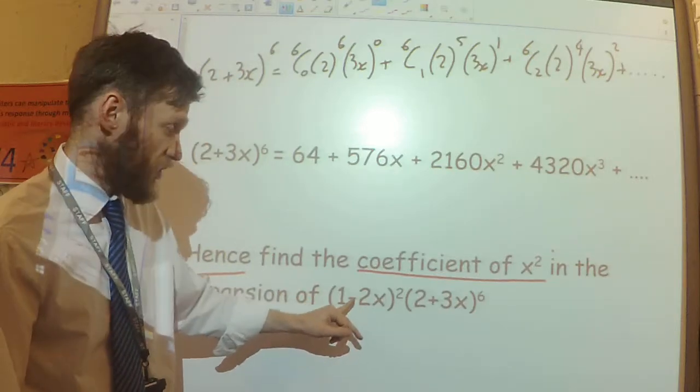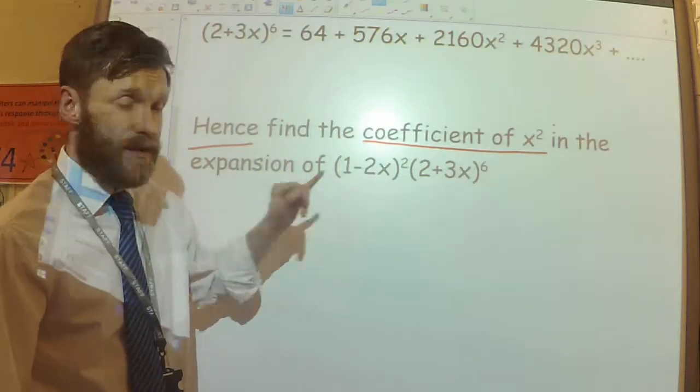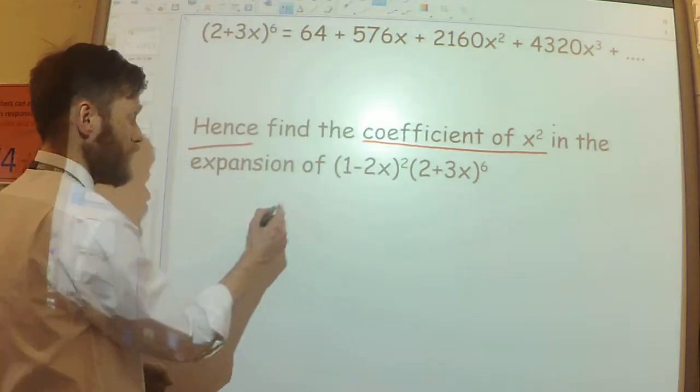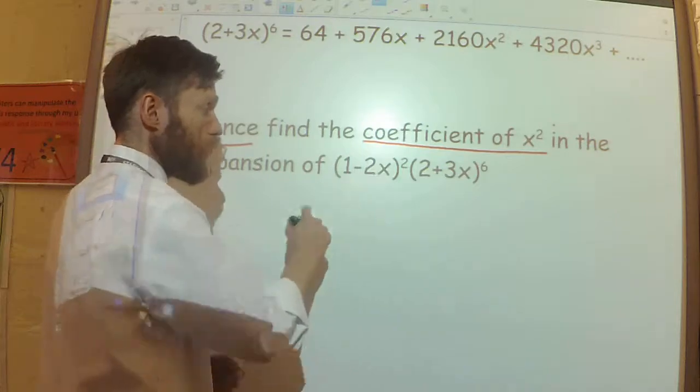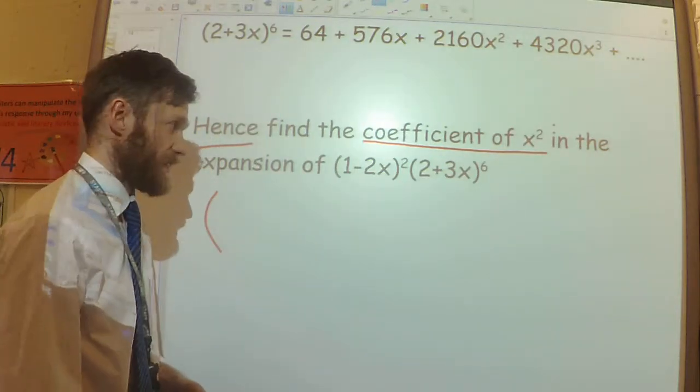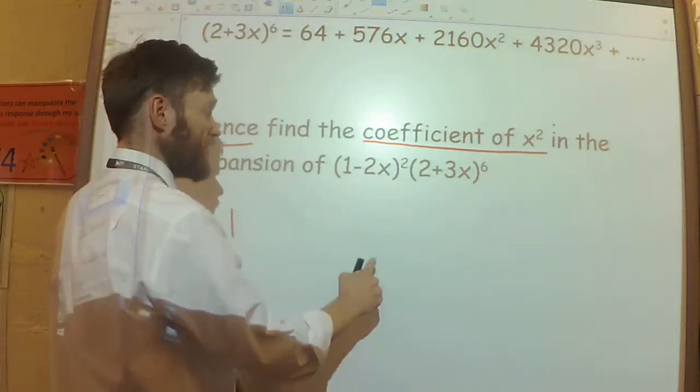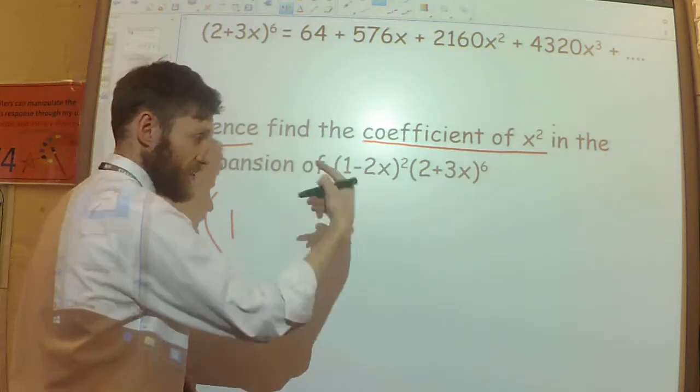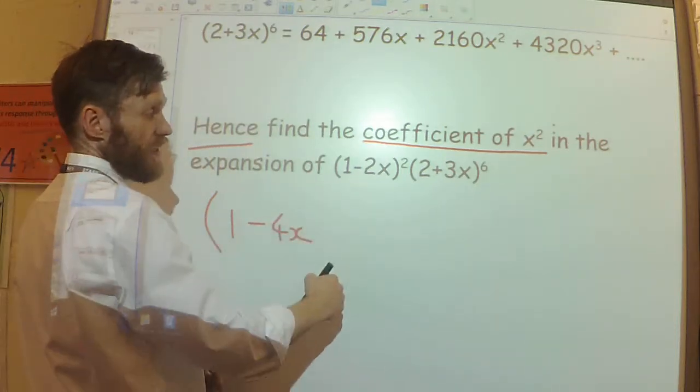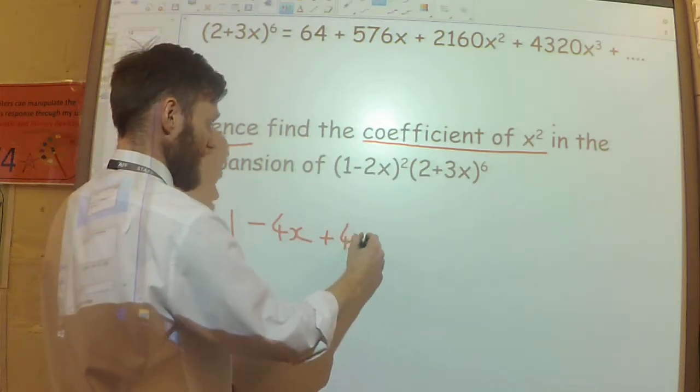I've just got the 1 minus 2x squared here that I need to expand and then I can times the two things together. If I expand 1 minus 2x all squared, I can do that just using the techniques from GCSE. 1 squared is 1. 1 times minus 2x is minus 2x and double it to minus 4x.